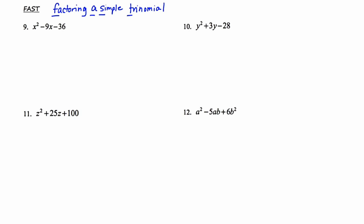Let's take a look at number nine as an example. I'm very certain that you've done this type of factoring before, so I'll go through these quickly. What I like to do first when using the FAST method is focus on the constant at the end. In number nine, that would be 36. I'm going to make a very organized list of all the factor pairings of 36.